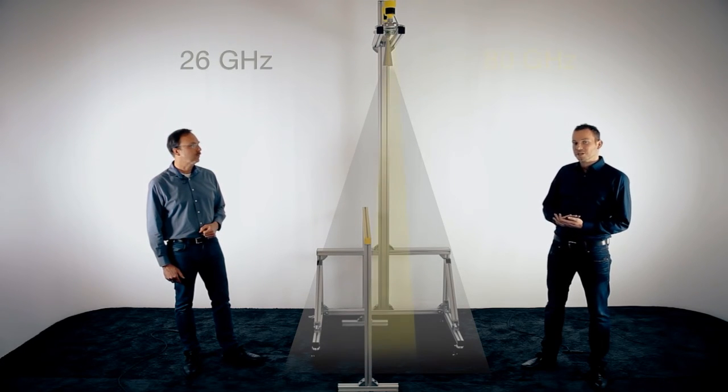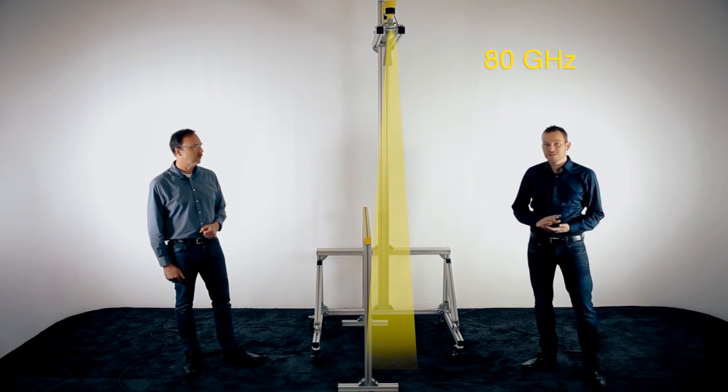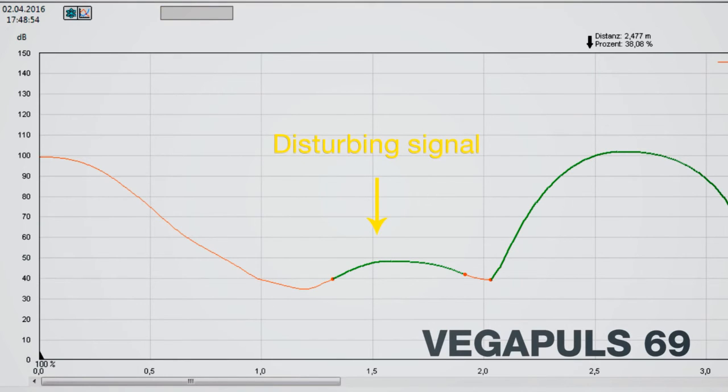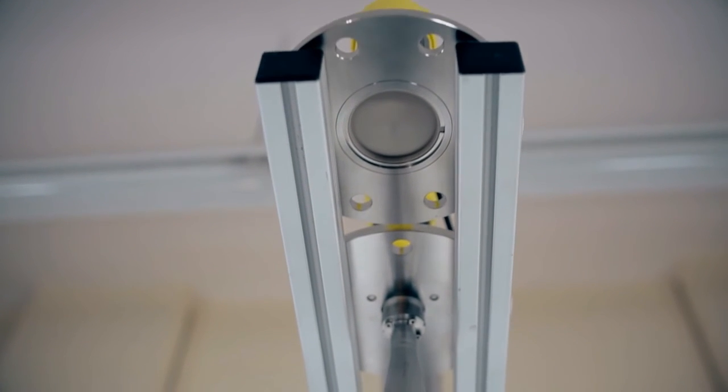With this short distance we are already now hitting the beam angle of the 80 GHz sensor as well. So let's have a look on the echo curve. On the echo curve you see a slightly false signal but very small and you still have a very good product echo. So in this case even if you have a product with bad reflecting conditions you get a very safe measurement with the Vega Pulse 69.